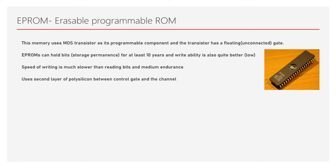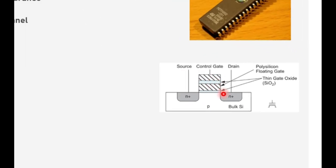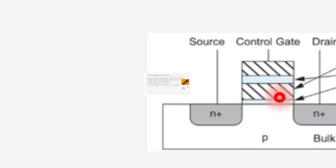It uses a second layer of polysilicon between the control gate and the channel. As you can see in this figure, the channel is here and the control gate is here, and there are two oxide layers — one on each side. This polysilicon is floating because on both sides it is connected to dielectric, so it is not connected to any metal. We have two poly layers here.